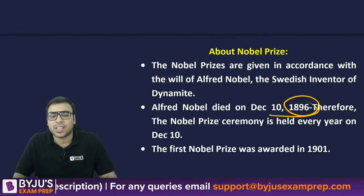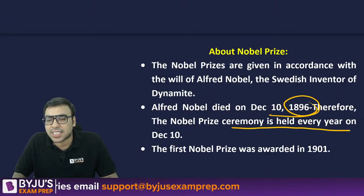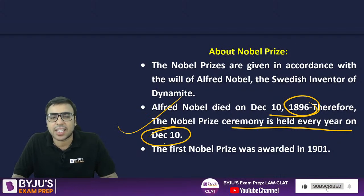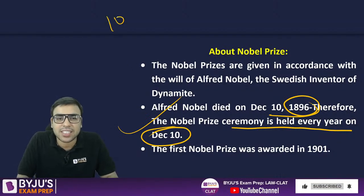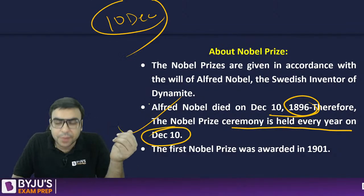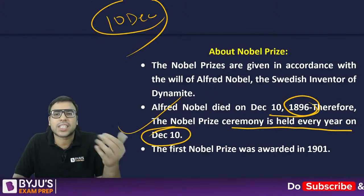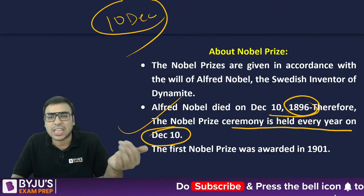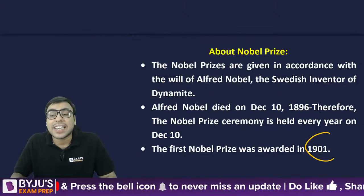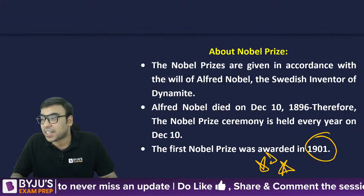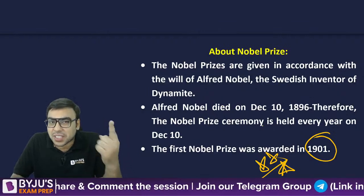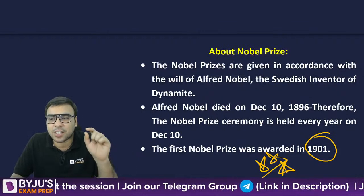He died in 1896, and therefore the Nobel ceremony is held every year on 10th December. The award is announced in October but given on 10th December, his death anniversary. It was first given in 1901 — this is very important for exams.